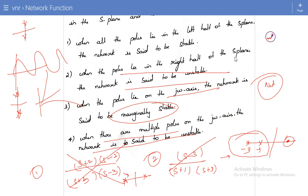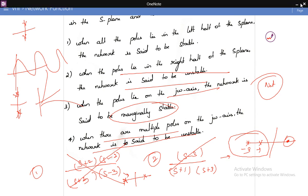Just by calculating the poles and zeros and locating them on the S-plane, you can determine whether the system is stable or not. The last topic — properties of driving point function and transfer function — will be discussed in the next lecture. If you have not understood clearly, please comment in the section so I can get back to you. Thank you.